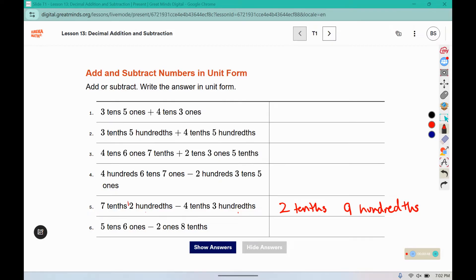We would have to regroup. 5 tenths minus 2 ones and 8 tenths. So the tens don't change. 6 ones minus 2 ones would give us 4 ones. Then I need to take 8 tenths from those ones. So I'm going to regroup it so that I would have 3 ones. And now I have 10 tenths. And 10 minus 8 would give me 2 tenths. Try the remaining 4 problems and write your answer in unit form for those as well.